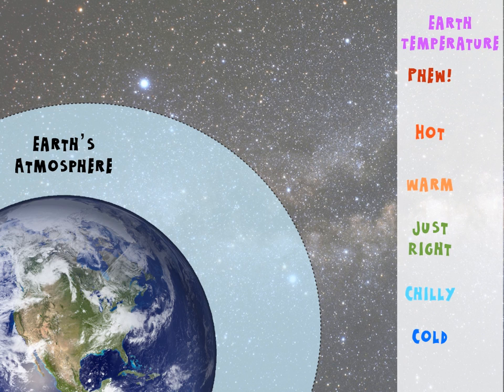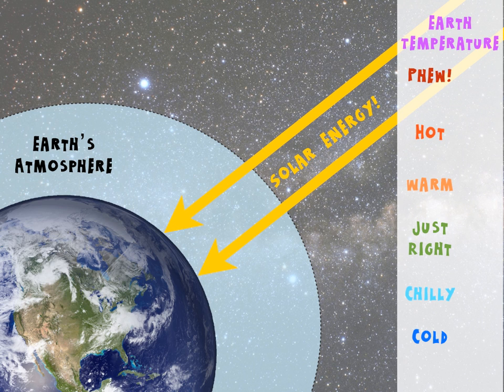Keep an eye on the right-hand side because that's going to tell us what the Earth's temperature is doing. So to start off with, energy from the Sun arrives at the Earth.